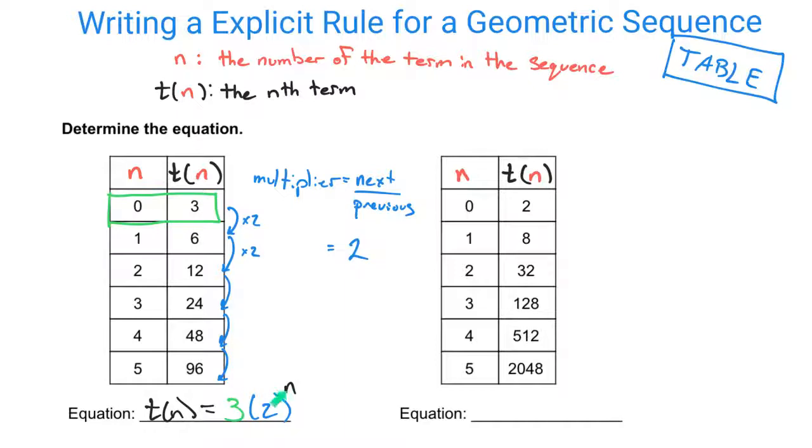So what we should see is that our general term, our general explicit equation for a geometric sequence, is t of n equals a times r to the n. There are several other letters that other online sources might use here, but we're using r to represent this multiplier, where you do the next over previous. So that's where this 2 came from. Then it's to the power of n, so n is in that exponent. And then a would be that initial or that term 0 that's out in front there.